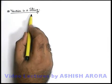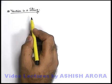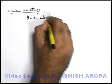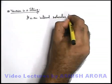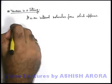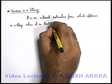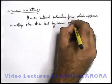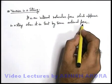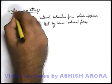Now we'll discuss tension in a string. As we already discussed, it is a force which appears when an external force is applied on a string to make it taut. So we can simply write: it is an internal molecular force which appears in a string when it is tautened by some external force. When we apply some external force on the string, the string becomes taut and an internal molecular force appears, which we call tension in a string.